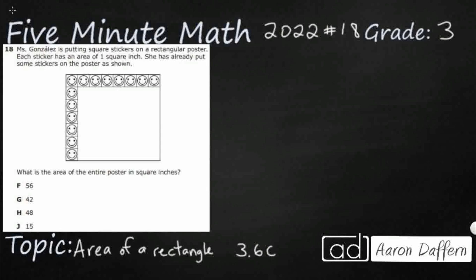So Ms. Gonzalez is putting square stickers — that's going to be very important, these are little squares. Each sticker has an area of one square inch, so there's our unit — these are little square inches. She's already put some stickers in there to show us how many rows and how many columns we have. So what is the area of the entire poster?